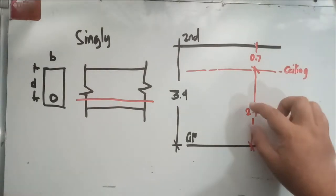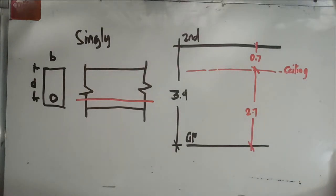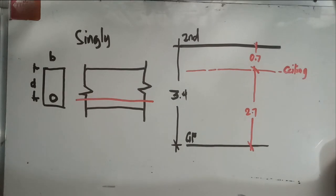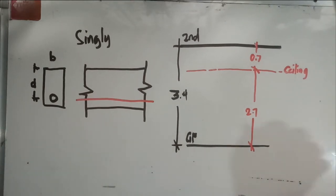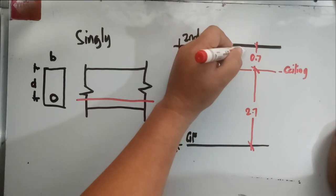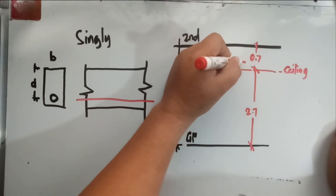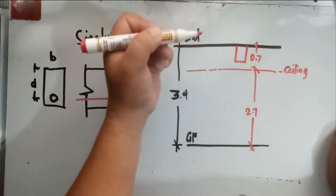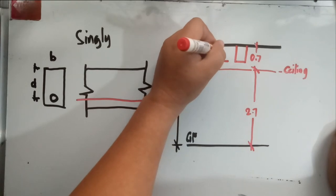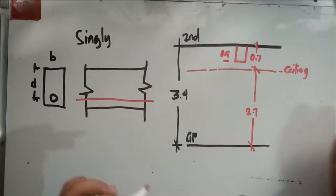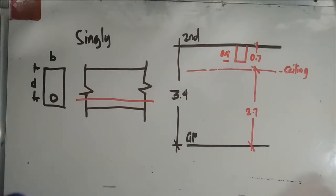The architect has specified 2.7 meters as the headroom. For the sake of discussion, the structural engineer determines that the maximum depth available for the beam is about 0.4 meters, and the width is set at 0.3 meters - reasonable proportions for the span involved.